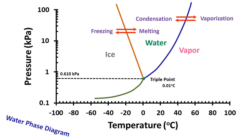Fourth is the sublimation line. Water remains ice on the left side of the sublimation line. As we cross the line from left to right, ice transforms to water vapor and it is the sublimation process. Similarly, if we cross from the right side to the left side, then water vapor is transformed to ice and it is the deposition process.